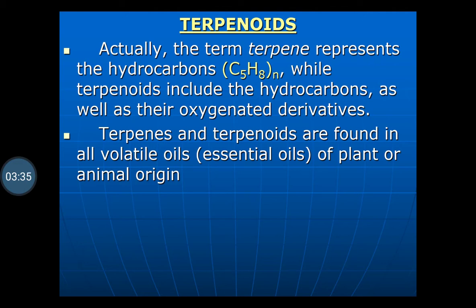Basically, the Volatile Oils are the Terpenoids. The term Terpene represents the hydrocarbons, that is the C5H8 unit, which the Terpenoids contain — it is an Isoprenoid unit and it is biosynthesized through the Isoprenoid unit in the plants. Terpenoids include the hydrocarbons as well as their oxygenated derivatives. Terpenes and Terpenoids are found in all Volatile Oils of plant or animal origin.